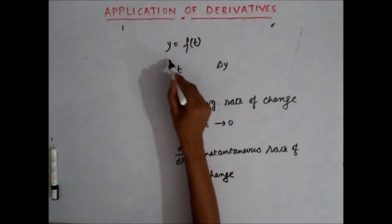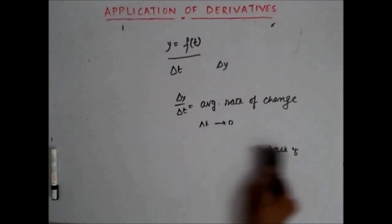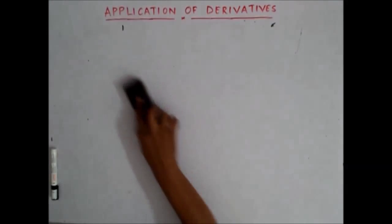So that means what? Given a function y equals to f(t), the derivative of the dependent variable y with respect to the independent variable t gives the rate of change of y with respect to t. Or in other words, it gives the differential change in y with respect to differential change in t. Now let's take a problem so that you understand this concept very clearly.